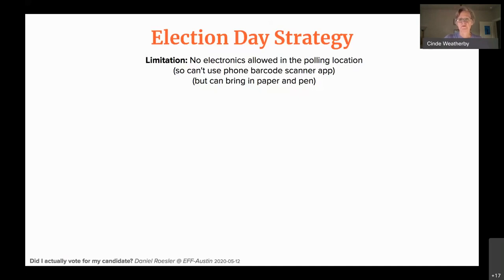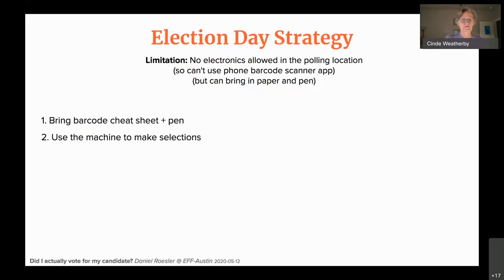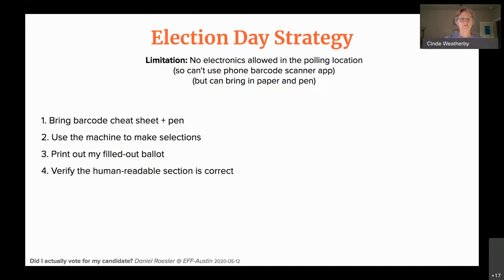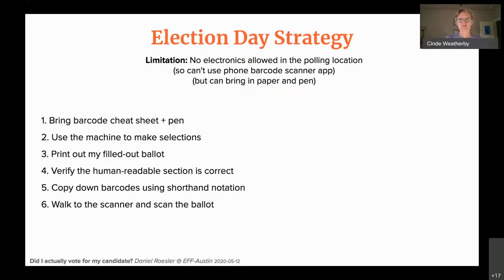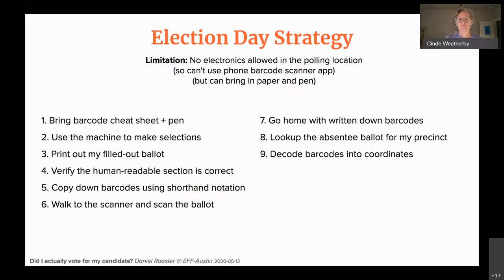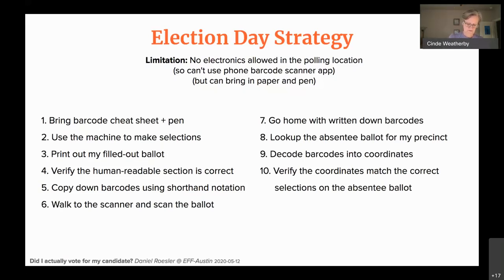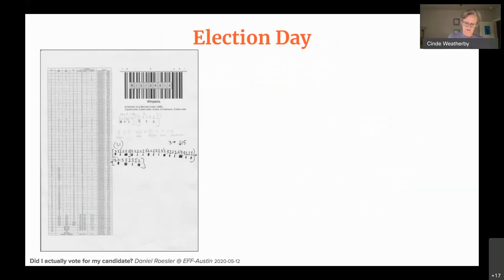My election day strategy: first, I'll bring a barcode cheat sheet and a pen. I'll vote on the machine, print out the filled-out ballot, verify the human-readable section is correct, then copy down the barcodes using the shorthand notation. Then I'll walk to the scanner and cast my ballot. At home, I'll look up the absentee ballot for my precinct, decode the barcodes into coordinates, verify the coordinates match the correct selections on the absentee ballot — and then give a talk about it to make it all worth it.